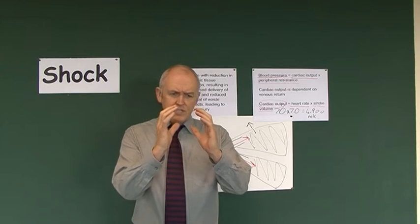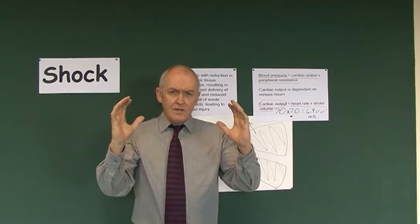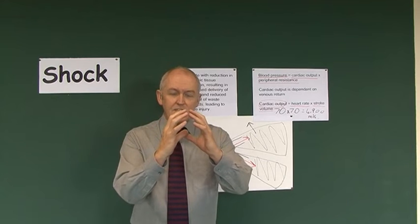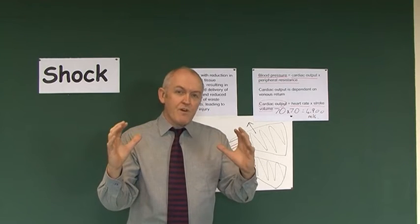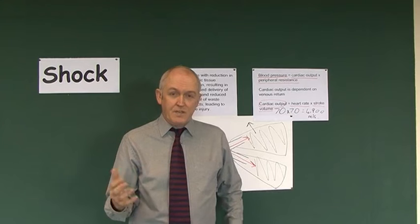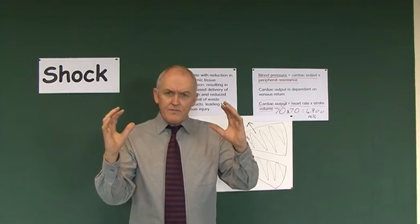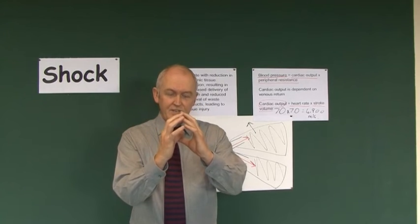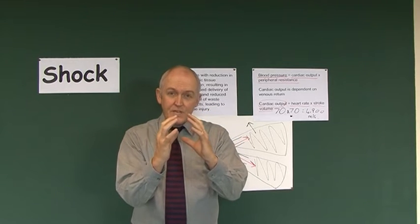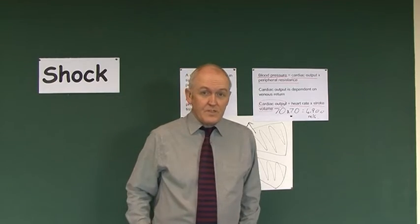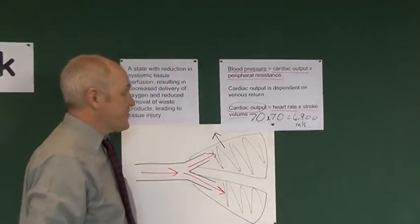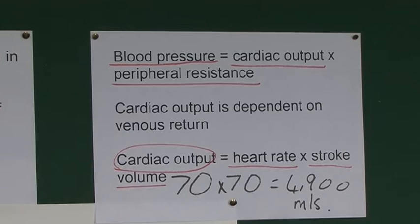There's another factor: peripheral resistance, sometimes called systemic vascular resistance. This occurs because the arterial system, particularly the arterioles, are able to vasodilate and vasoconstrict. When arterial vessels vasodilate, that reduces peripheral resistance and will therefore reduce blood pressure. However, if the arterial vessels constrict — vasoconstriction — that squeezes down on the blood, increases the pressure, so increased peripheral resistance increases blood pressure. Blood pressure is determined by those two factors: cardiac output and peripheral resistance.